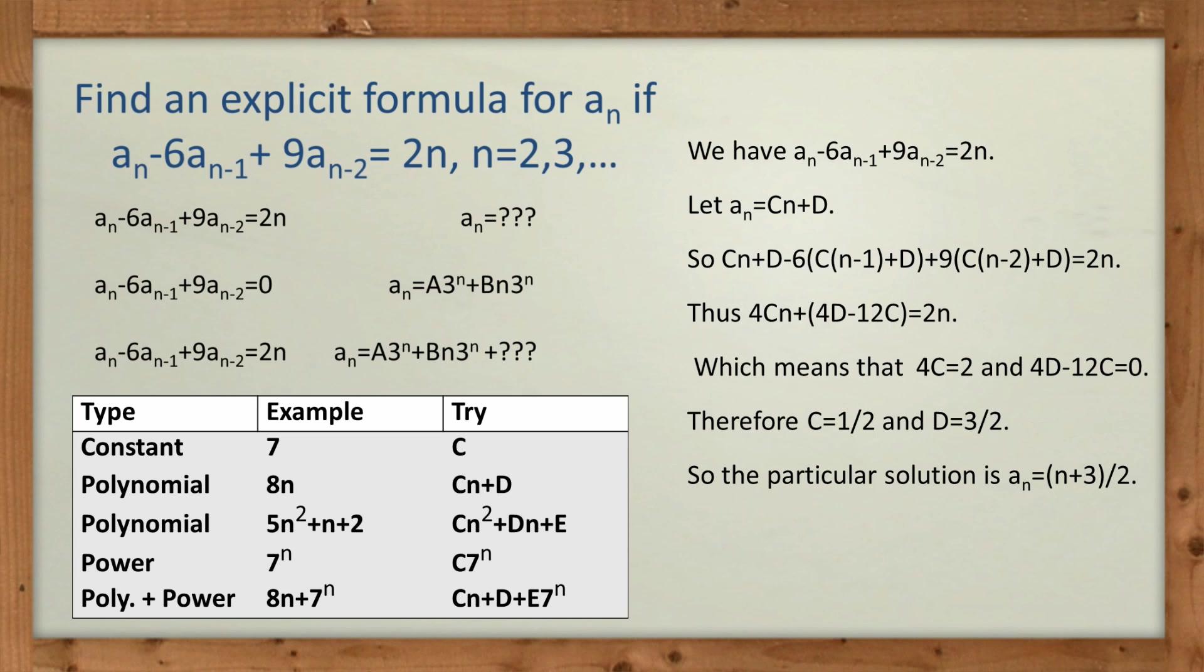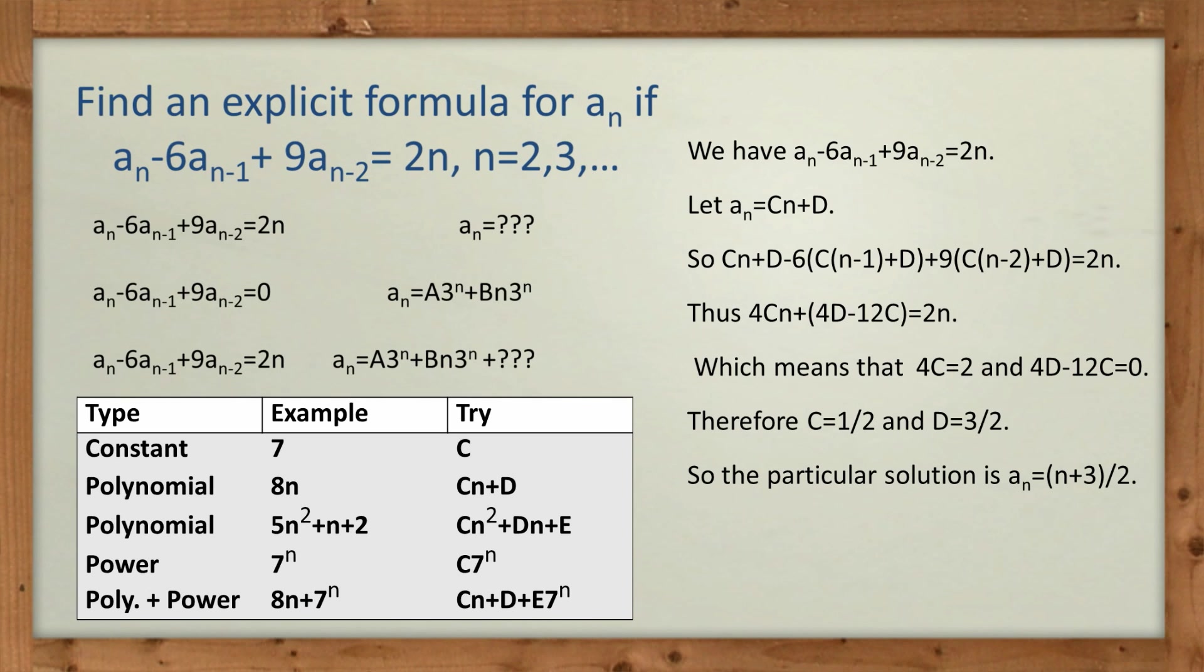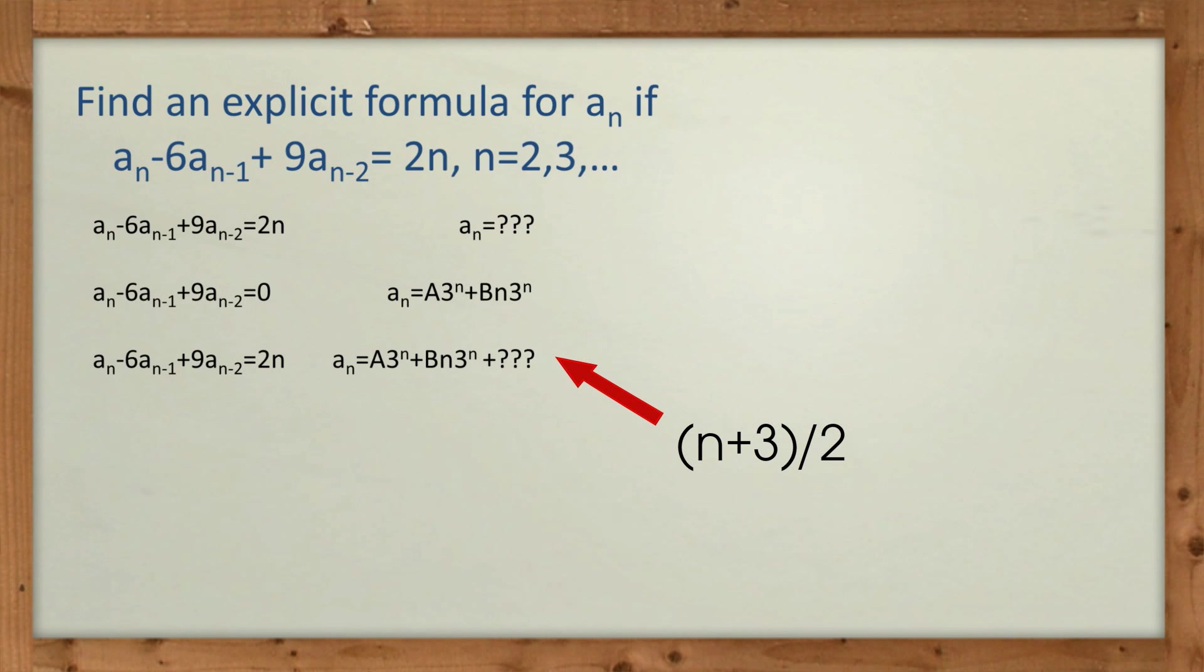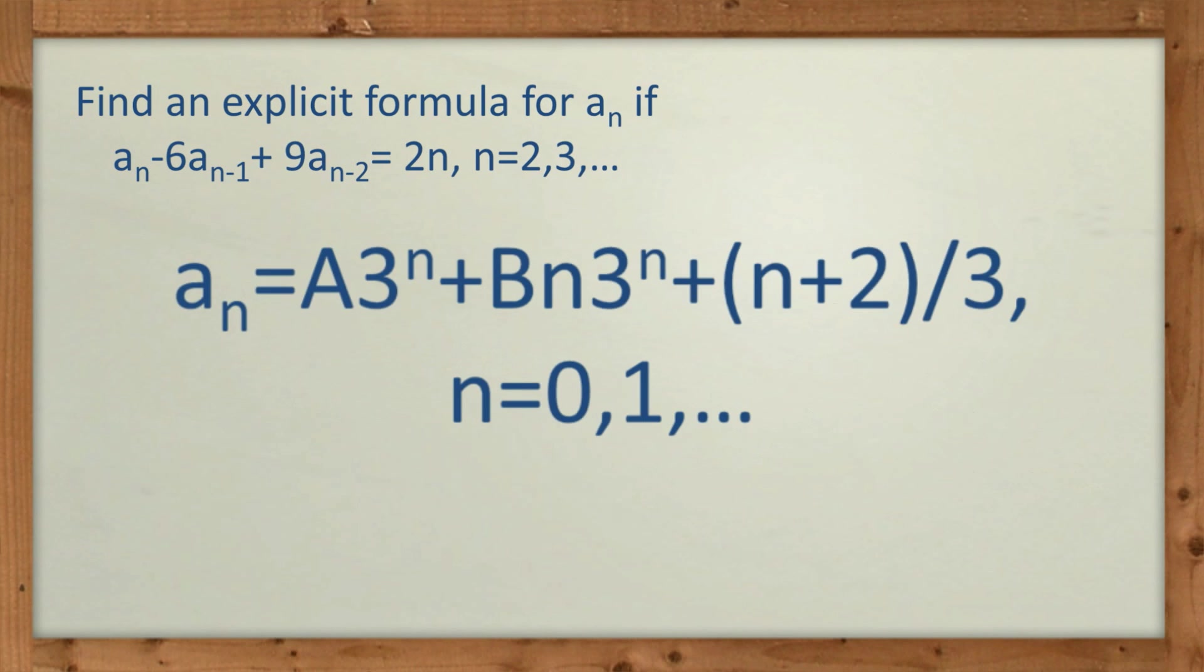So this particular solution, these three question marks, the actual solution there is a_n equals (n+3)/2. And so our final solution, remember, is the sum of the two. This question, if you like, plus the previous one that we did. And so you can see here the final answer, which is a combination of the two, and that gives us all the solutions to the problem.